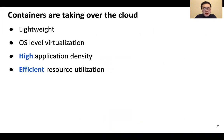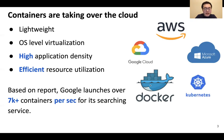Let me introduce container overlay networks first. Containers are taking over the cloud. They provide lightweight operating system level virtualization with the fastest setup, high application density, and efficient resource utilization. It is reported that Google launches over 7,000 containers every second in its search engine. With the help of orchestration tools like Kubernetes and Docker Swarm, services of a distributed application can be packaged into multiple containers, automatically and dynamically deployed across physical or virtual machines.